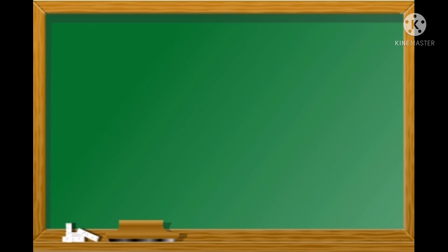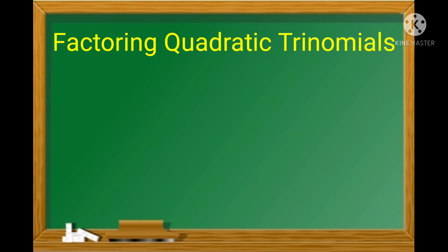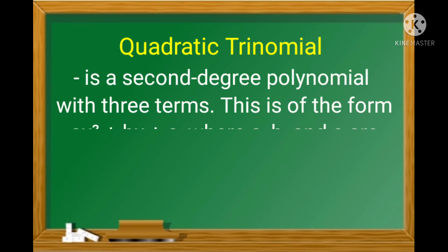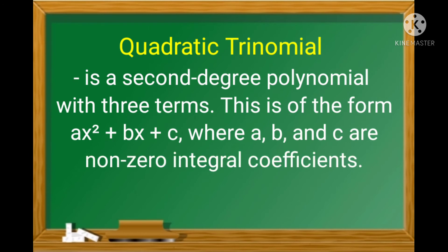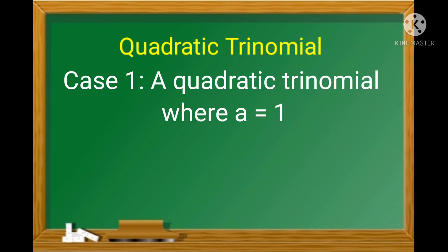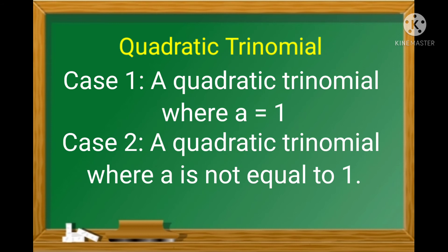The last technique of factoring polynomials is factoring quadratic trinomials. In this lesson, you will be able to factor a trinomial completely. A quadratic trinomial is a second-degree polynomial with three terms, of the form ax² + bx + c, where a, b, and c are non-zero integral coefficients. The discussion is divided into two parts: Case 1, where a = 1, and Case 2, where a ≠ 1.